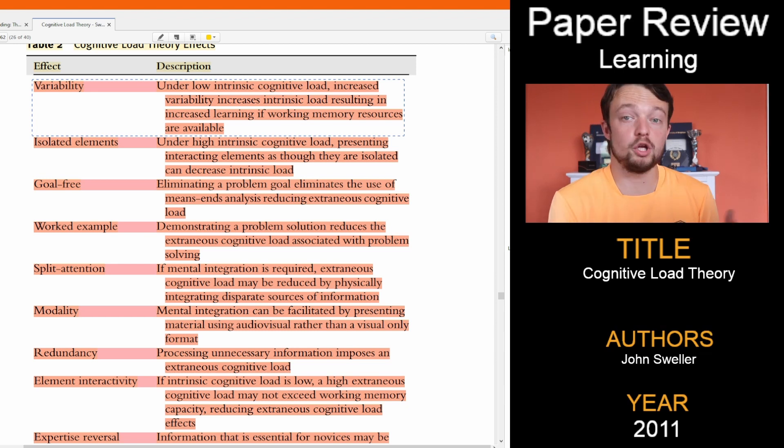So the understanding of information is what we are looking for, because that means we have learned from the information and have it stored in our memory for use. This is where various cognitive load effects can be seen inside of the learning journey that we can use to adjust how we teach or how we learn.